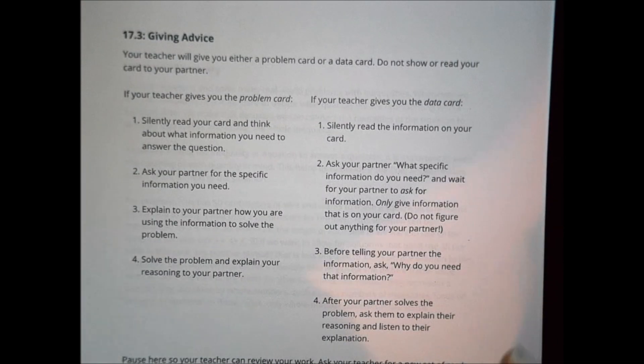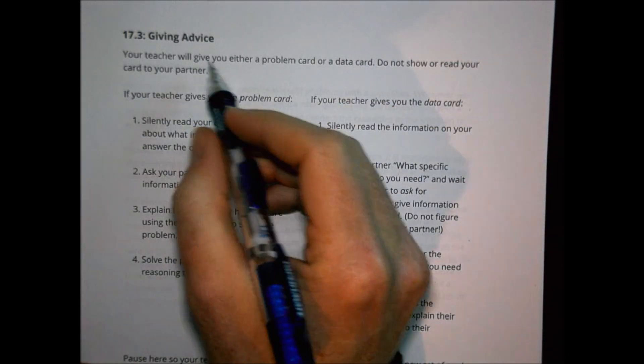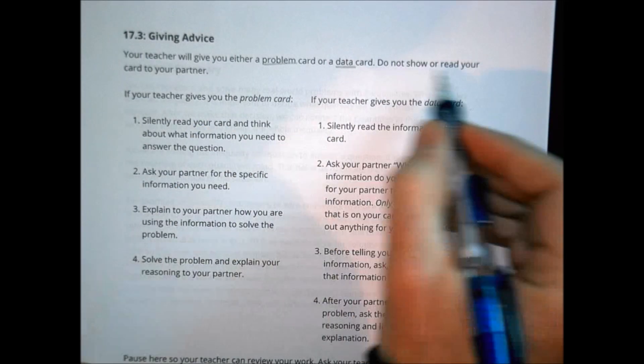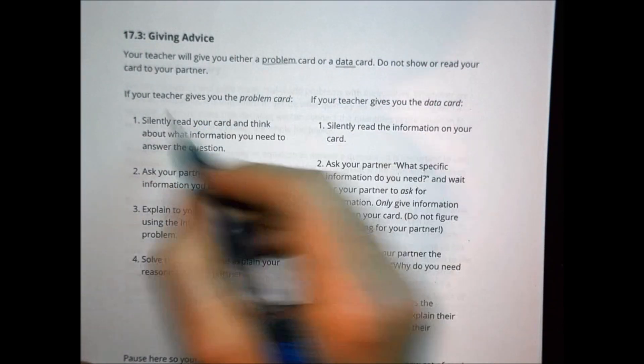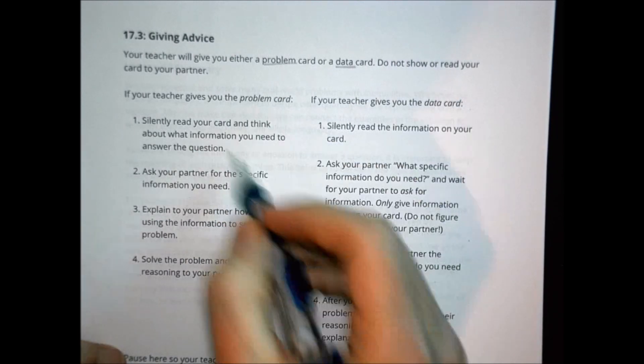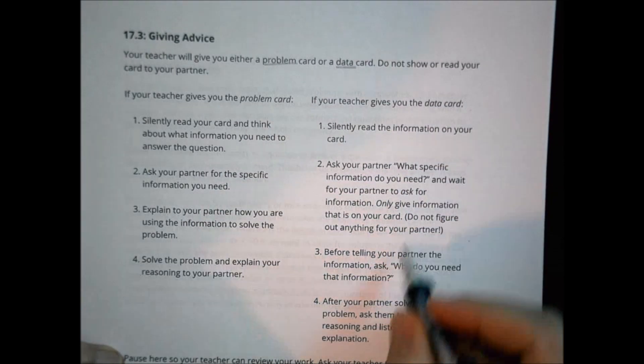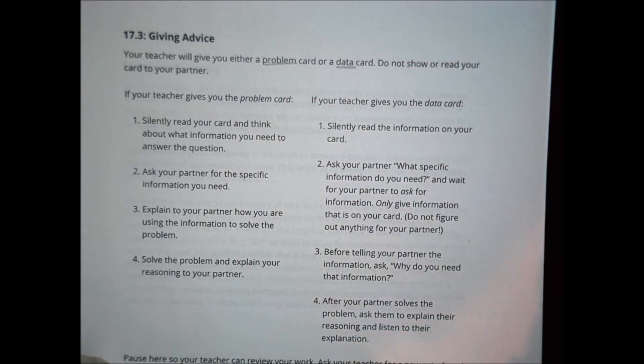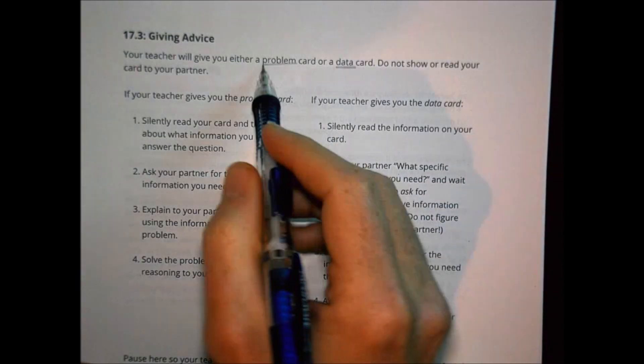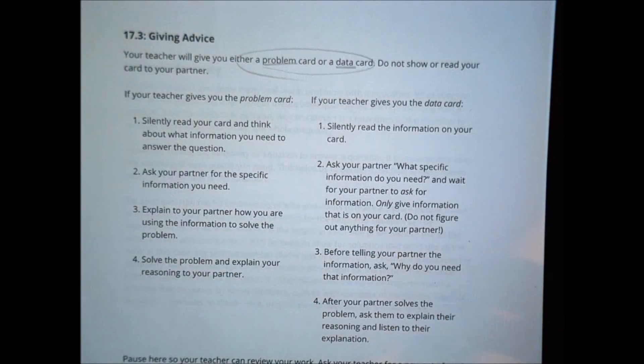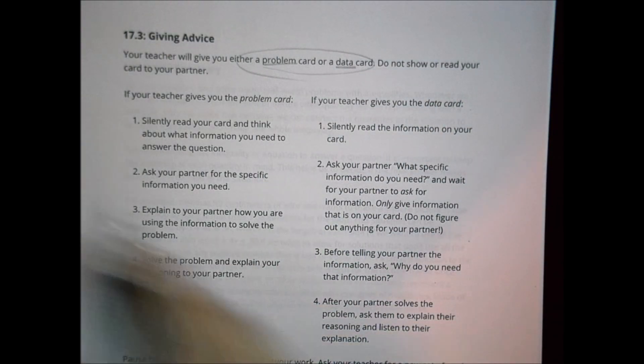In the next activity, your teacher will give you a problem card or data card. Don't show your card to your partner. Look at the problem and think about information you need to ask from your partner. The data card, answer the questions they ask, but make sure they ask you for a specific piece of information. Work those things out so you can solve some problems together with a partner. It's called Giving Advice Today.